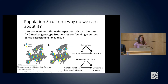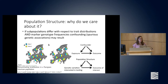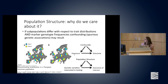One thing to be conscious of in GWAS is population structure. Population structure occurs if there are subpopulations in your data that differ with respect to both the trait distribution and marker genotype frequencies, creating confounding or spurious associations. This is a classical confounding scenario where the genetic variation exposure and the outcome are both influenced by a third factor — population structure.